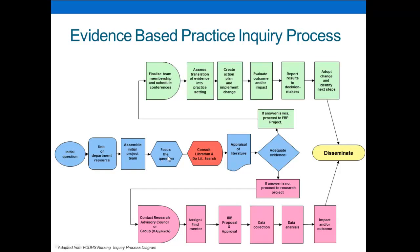When it comes to your literature search, don't hesitate to ask a librarian or someone with lots of skill in doing searches to help, because the research evidence is going to be very important in informing what you're able to do. As you appraise the literature, you're going to have to make a determination as to whether or not there's adequate evidence. If there is adequate evidence, it becomes an evidence-based practice project. If not, it becomes more of a research project in which you're trying to answer a brand new question. In any case, the main thing at the very end is to disseminate the information and get it out there to improve patient care.